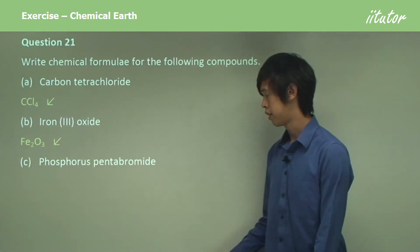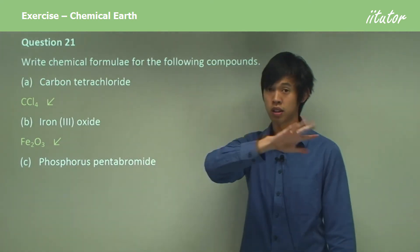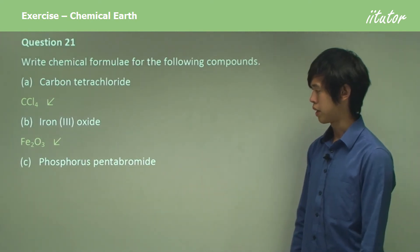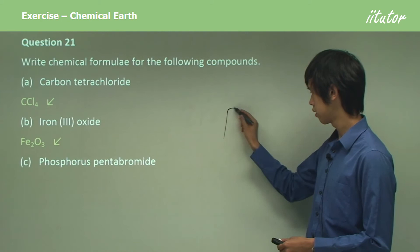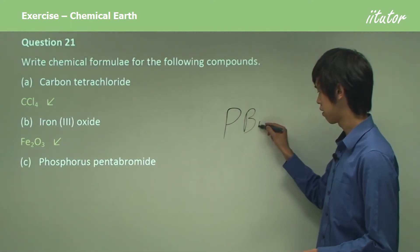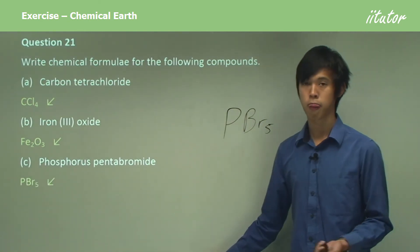Phosphorus pentabromide. So again, this one's easy because we don't need to worry about balancing the valencies or anything. Phosphorus is P and penta is 5. So pentabromide would be Br5. Okay, yeah, thank you.